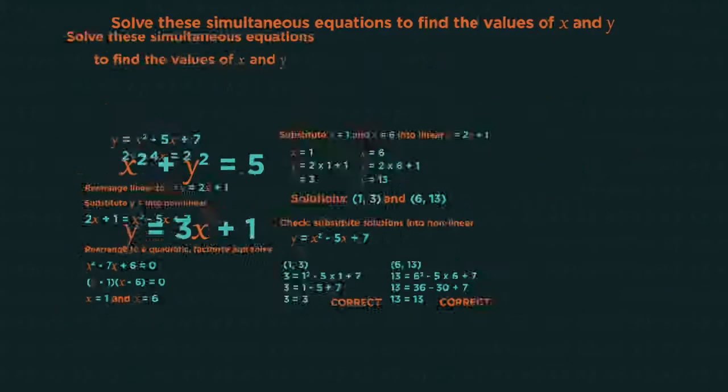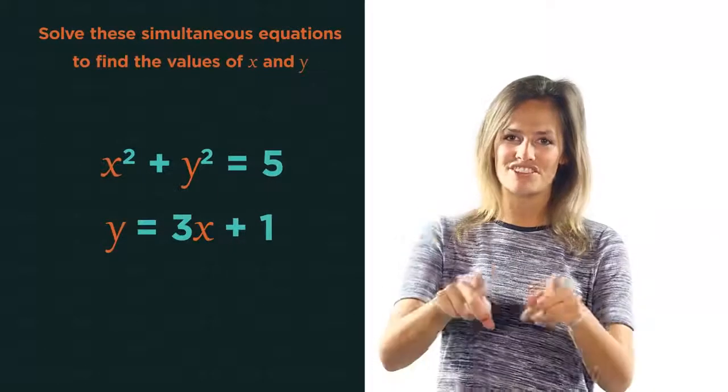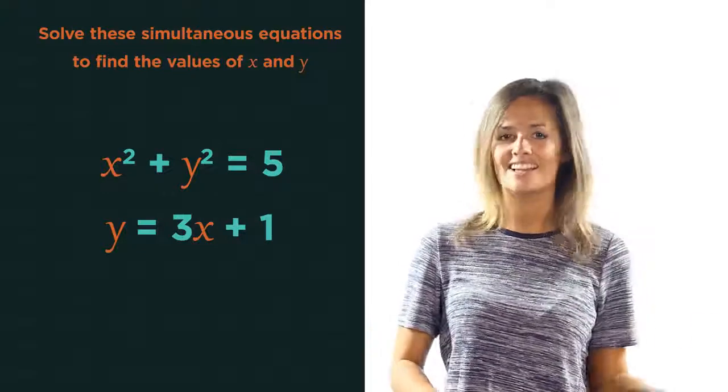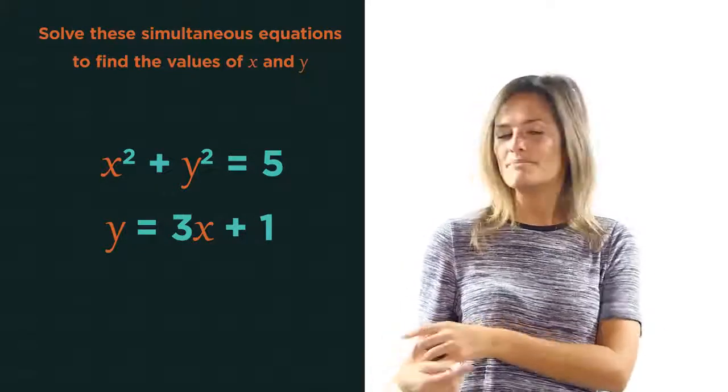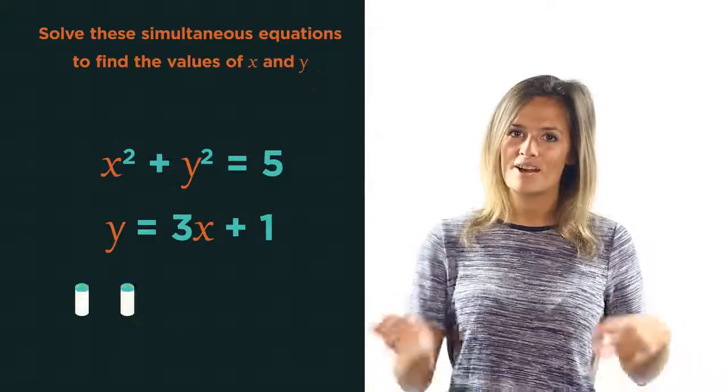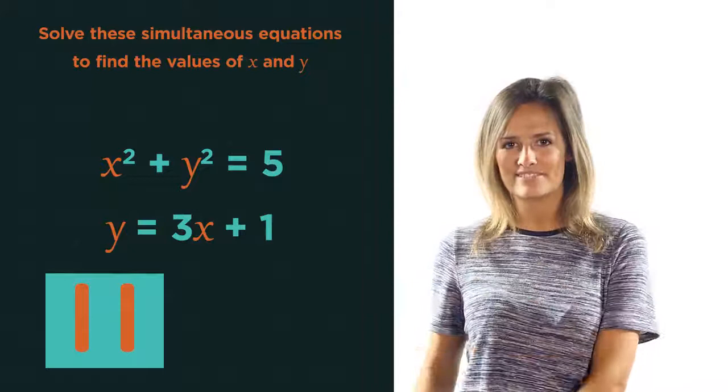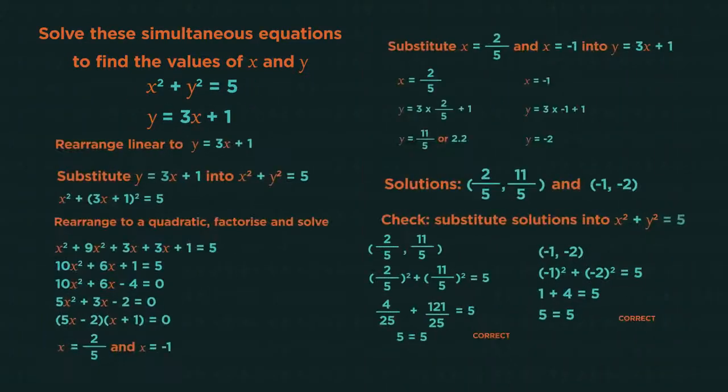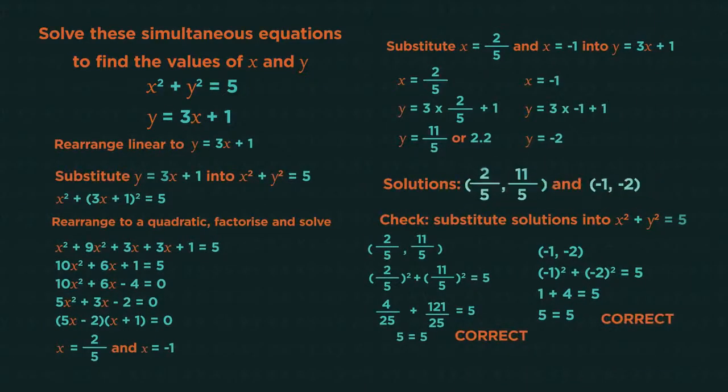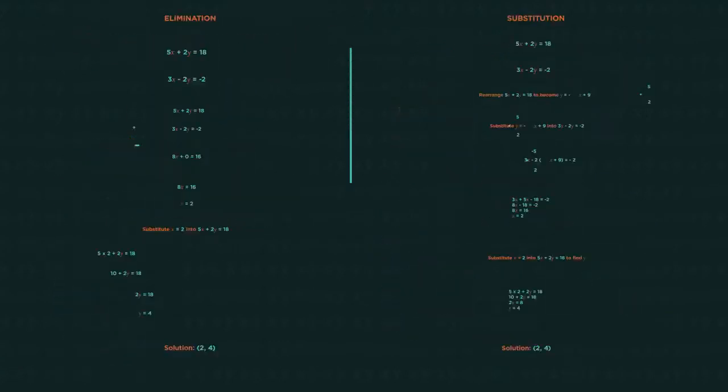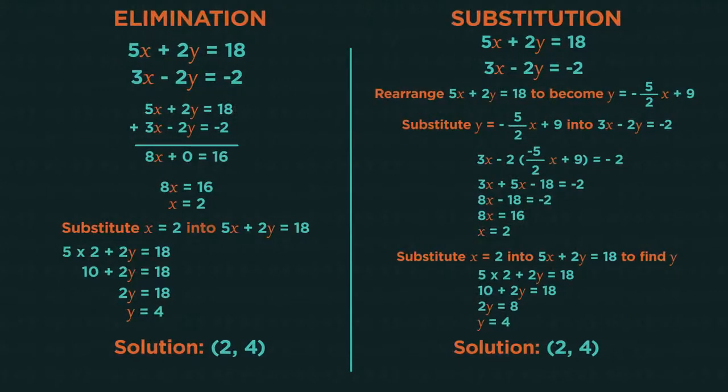So here's one final one for you to do. This time it's a circle and a linear equation but it's the exact same process. Pause the video, find both solutions, and click play when you're ready. Did you get (2/5, 11/5) and (-1, -2)?